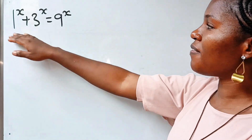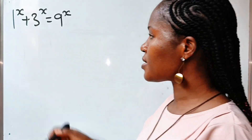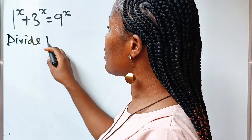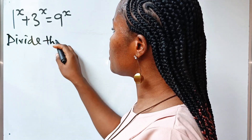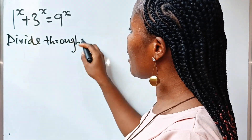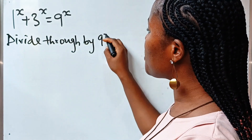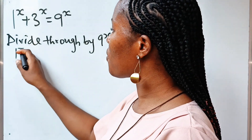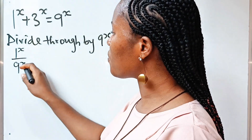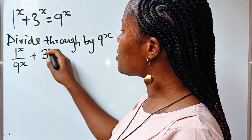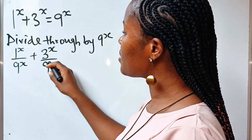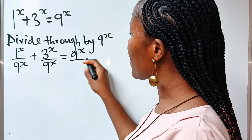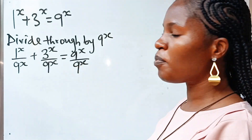First, let's divide through by 9 to the power of x. So if we do that, we have 1 to the power of x divided by 9 to the power of x, plus 3 to the power of x divided by 9 to the power of x, is equal to 9 to the power of x divided by 9 to the power of x.